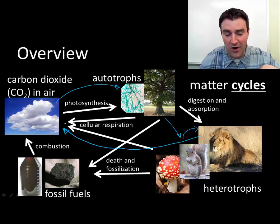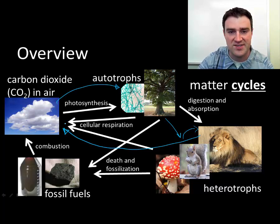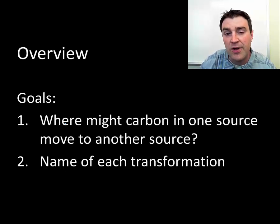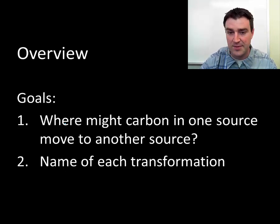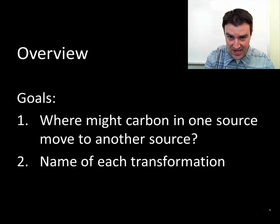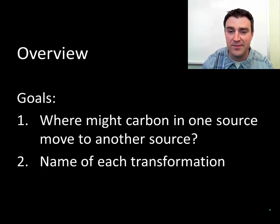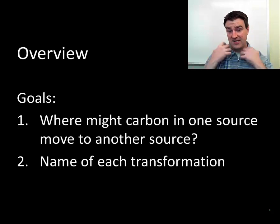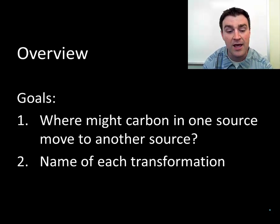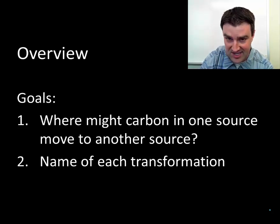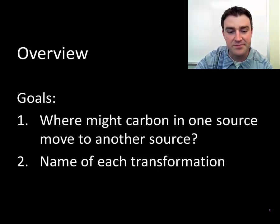That's just one way carbon gets back to where it started. What I really want you to take from this video is the ability to talk through the carbon cycle — where might carbon go if it's in one source, and how might it move to another? Not all arrows go in every direction. For example, I as a human cannot pull carbon dioxide out of the atmosphere myself — only autotrophs can do that. I also want you to name each transformation as you draw it: what is the process of converting carbon from one form to another?